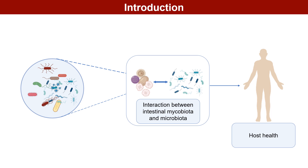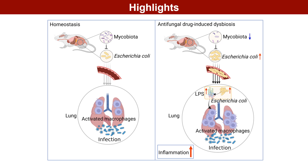Here, we showed that the interaction between intestinal fungi and bacteria shaped lung inflammation during infection. Key findings: 1. Antifungal drug-induced dysbiosis of gut microbiota aggravates lung inflammation during infection. 2. Dysbiosis of intestinal microbiota results in gut E. coli overgrowth and translocation to the lung during infection. 3. E. coli induces lung accumulation of CD45+ F4/80+ Ly6G- Ly6C- CD11b+ CD11c+ macrophages. 4. Clearance of macrophages or deletion of TLR4 blocks the antifungal drug-induced aggravation of lung inflammation during infection.